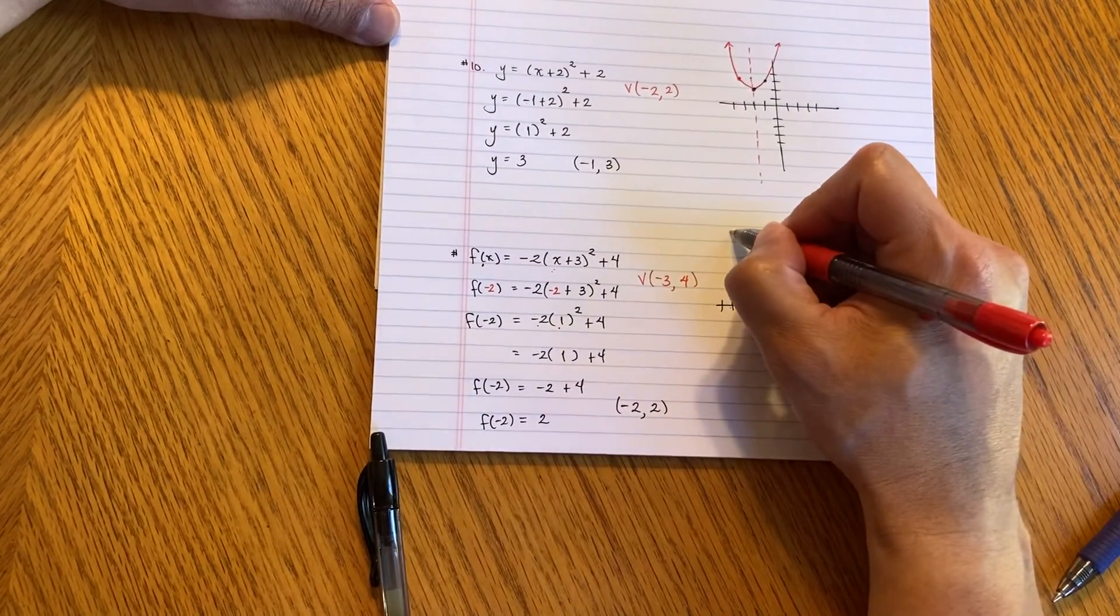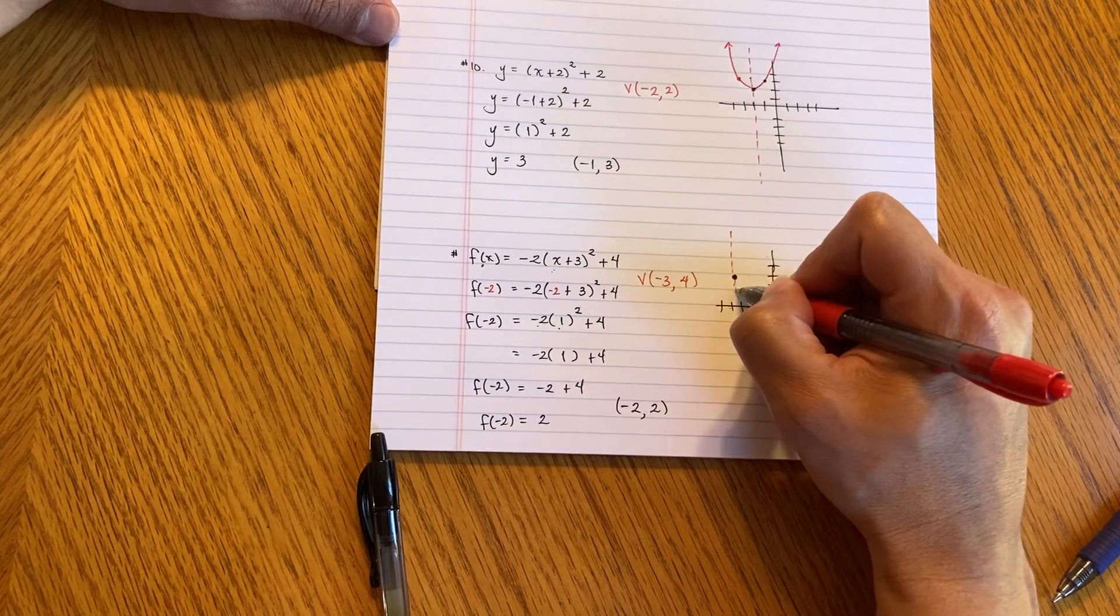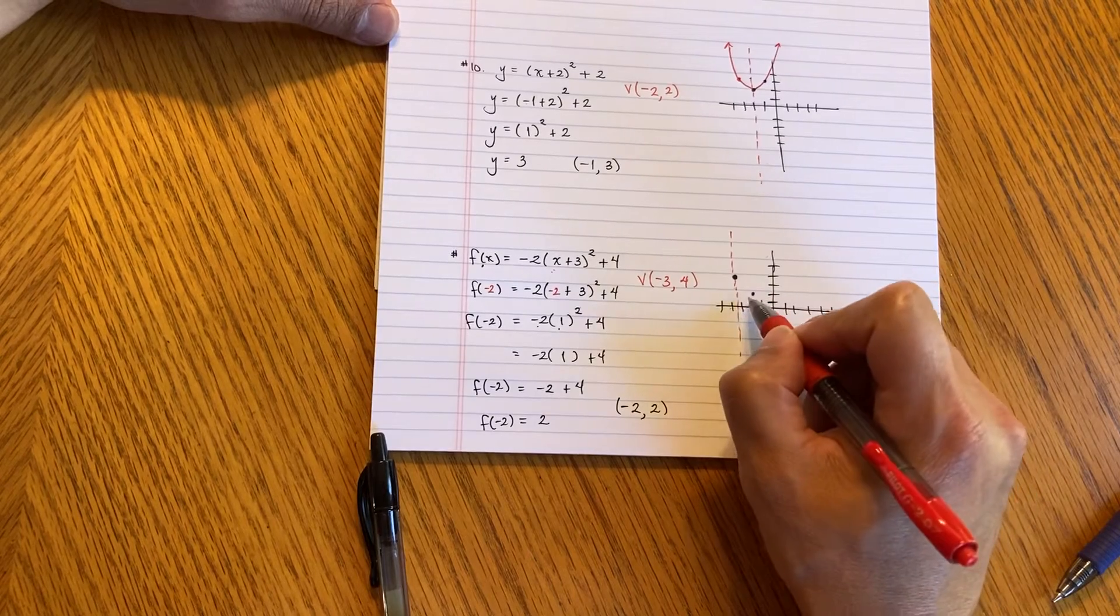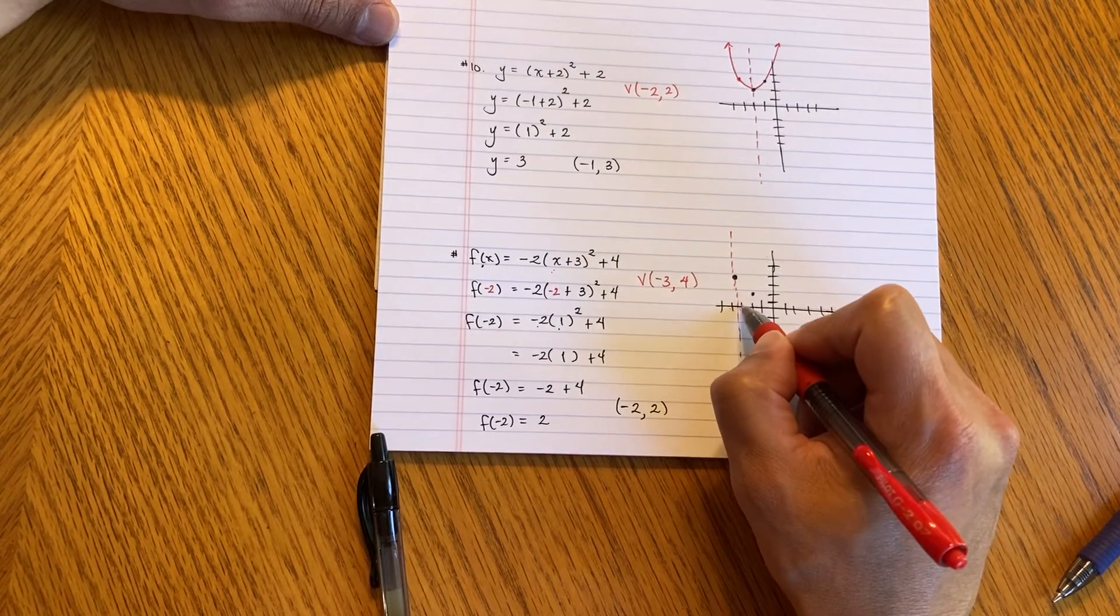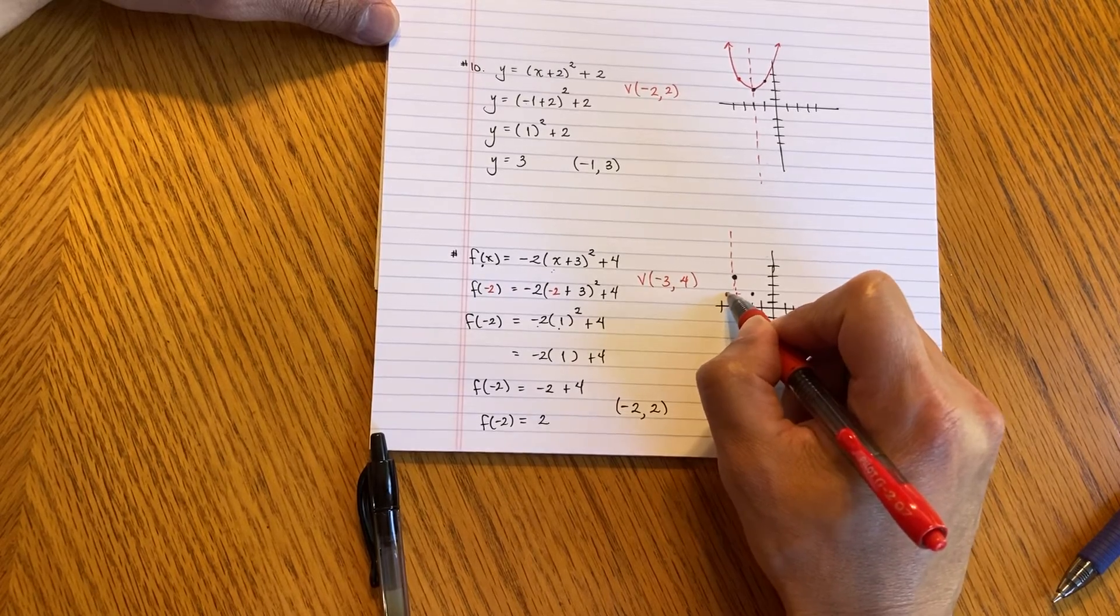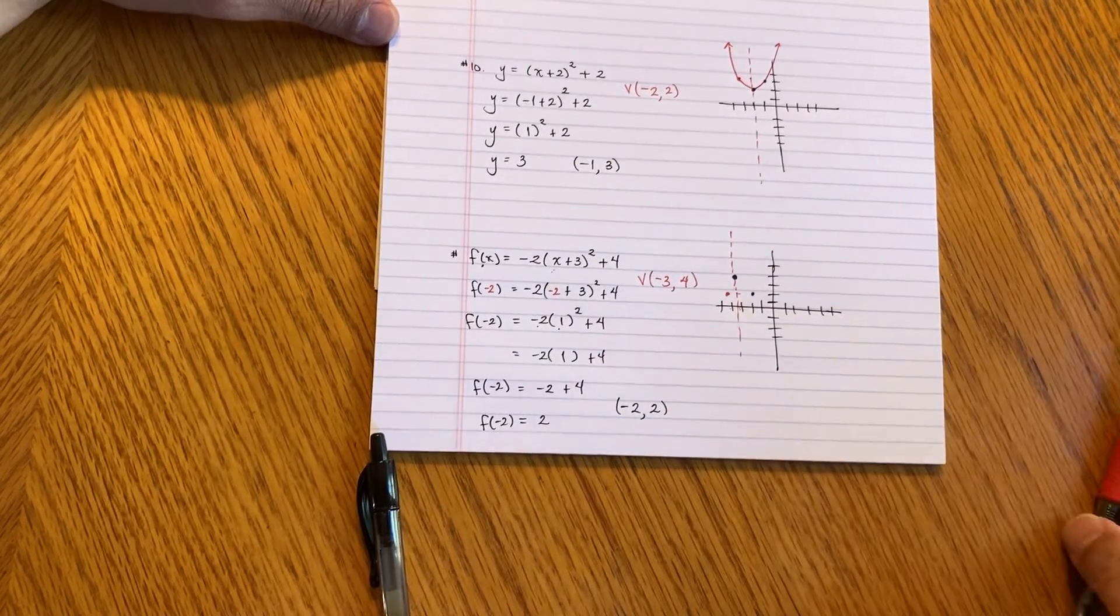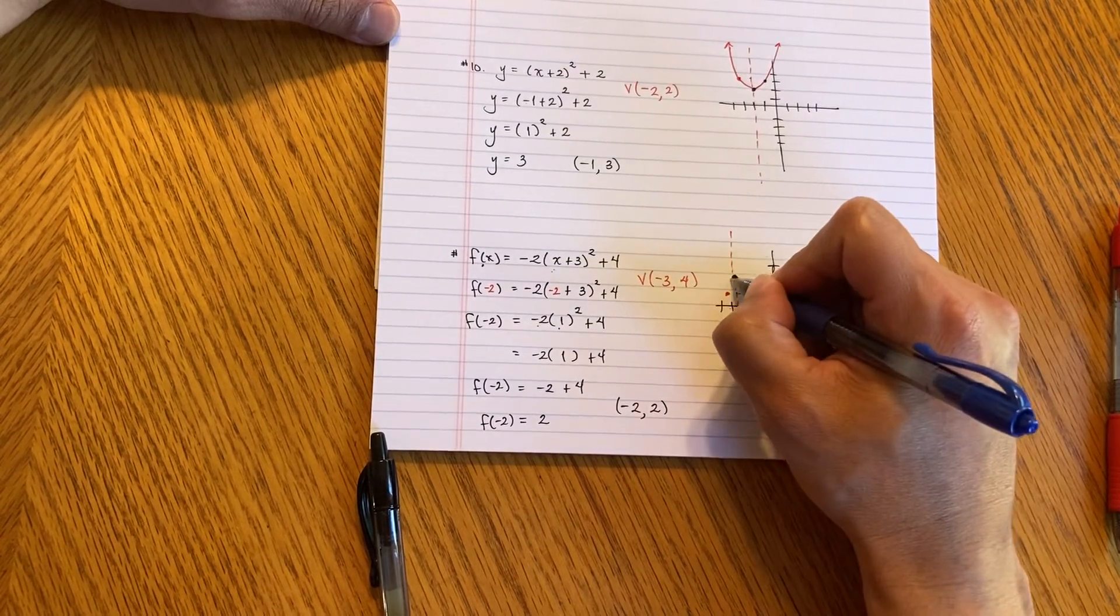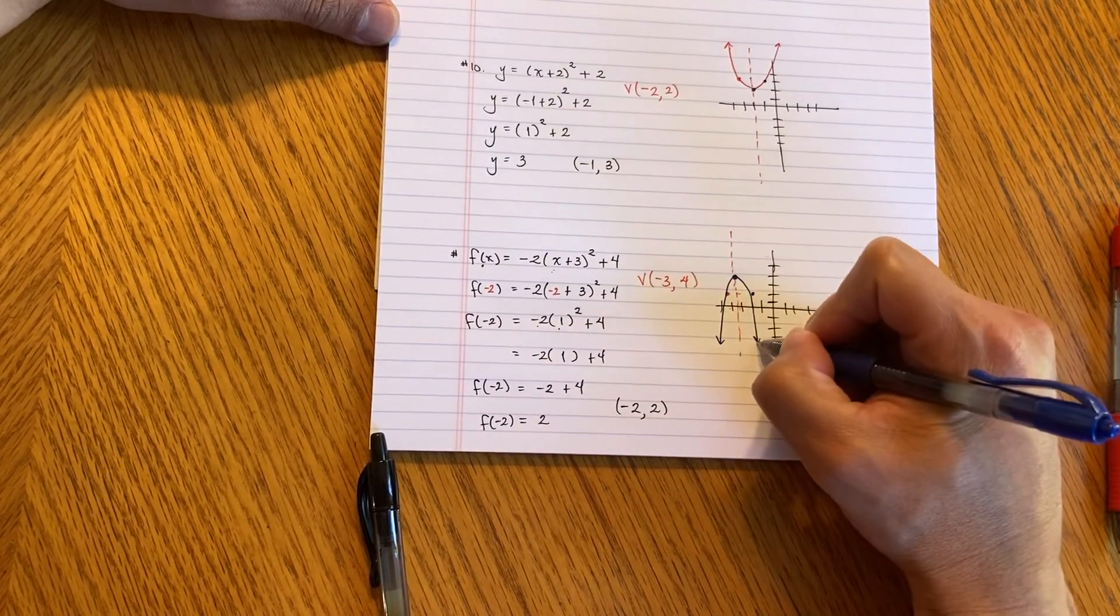And remember, again, here's my line of symmetry. And I didn't draw it exactly, but it's okay. So it should pass through the 3 right here. So 1 unit to the right is going to be 1 unit to the left. And then we're just going to go ahead and graph it. Something like this.